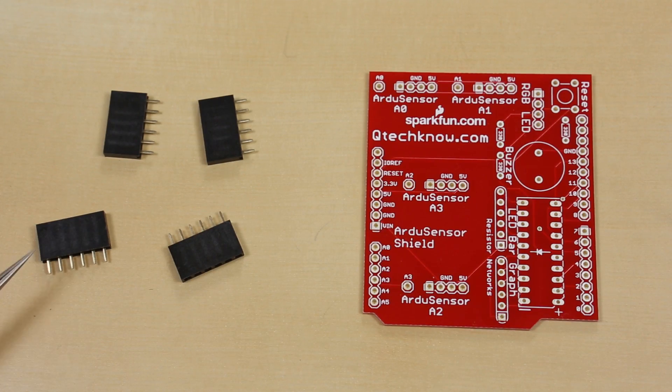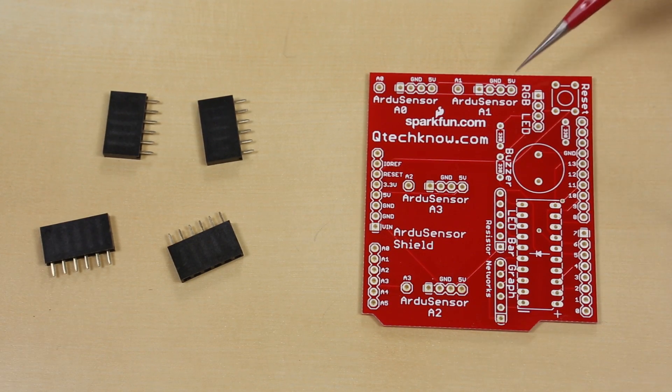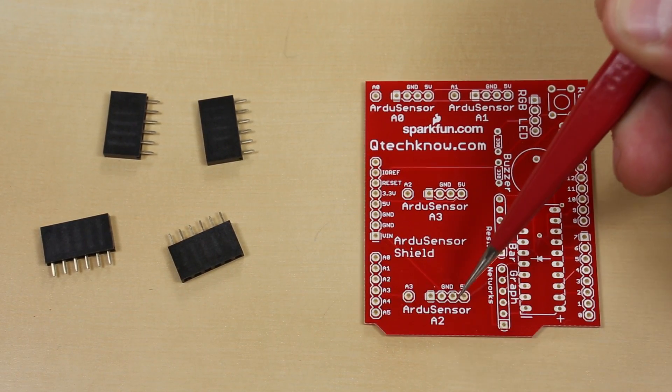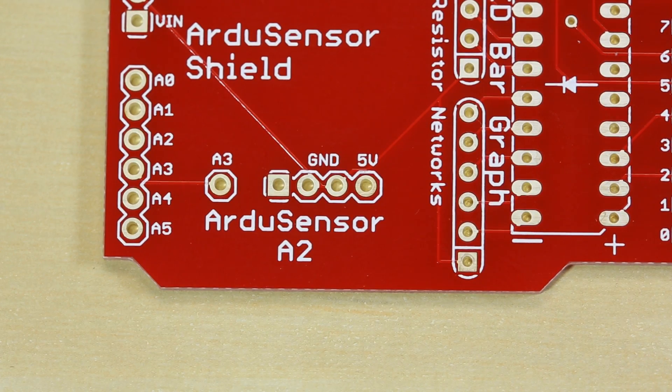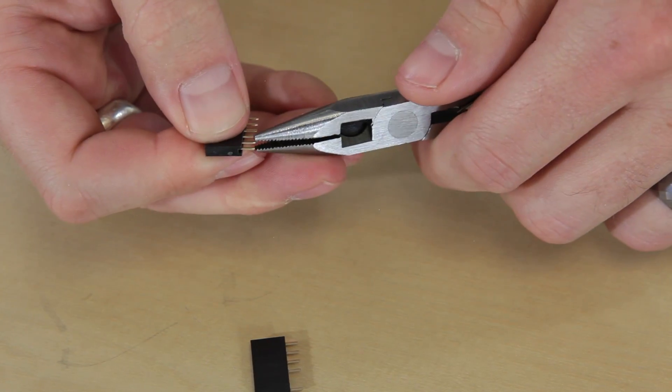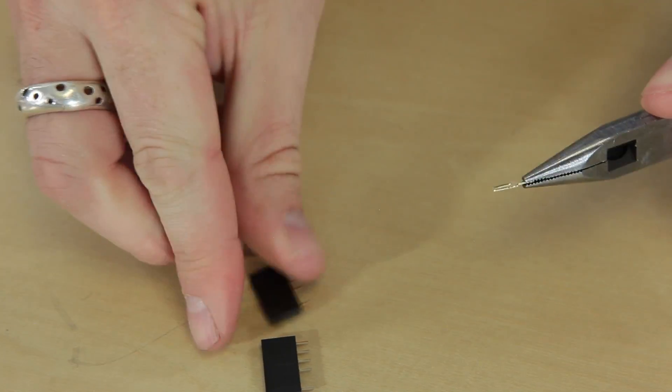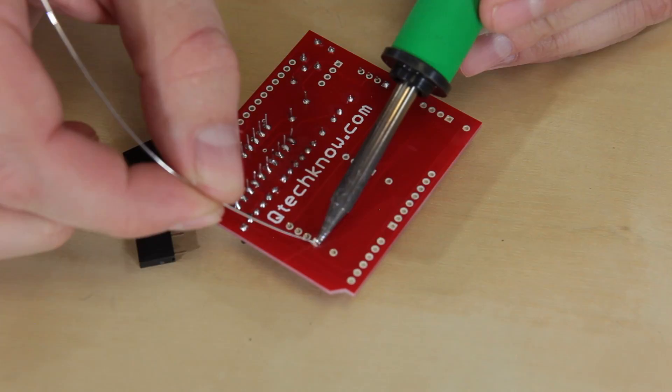Next we need to take these female headers and place them here, here, here, and there. But if you look at these six-pin headers, there's one missing, so we need to pull out one of these pins so they fit into place. And now these are ready to solder.